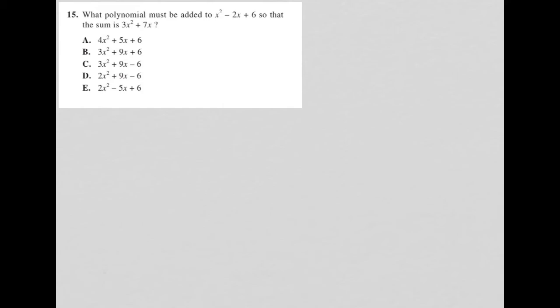What polynomial must be added to x squared minus 2x plus 6 so that the sum is 3x squared plus 7x?